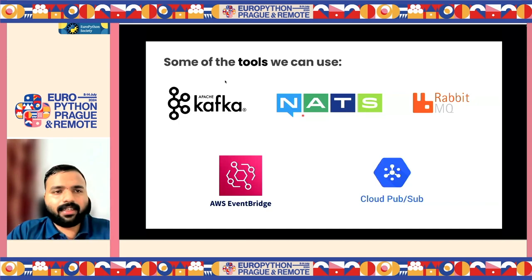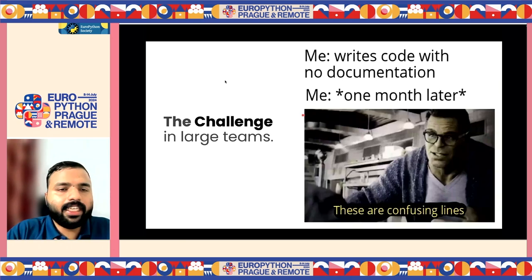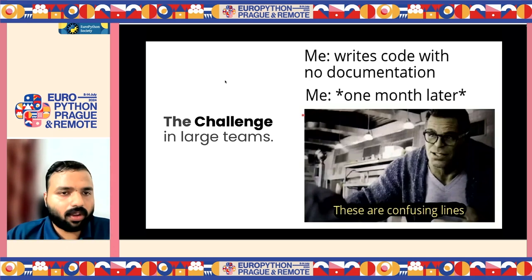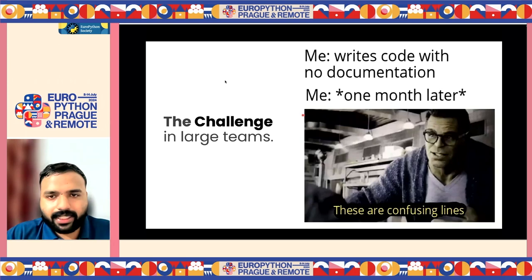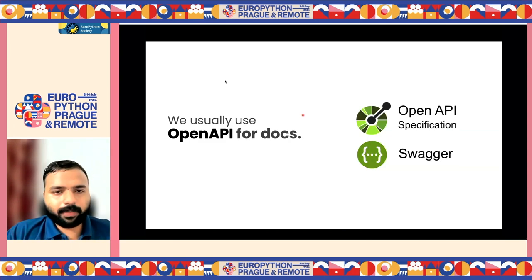In large teams, what happens is we define our events, send them, and build a system. Then later we don't have enough documentation or information. As a consumer team member, I may not have any insight about the logic that was written or the structure. And the structure would change. In the case of REST APIs, we usually use OpenAPI as our documentation system and define our APIs using the OpenAPI specification.